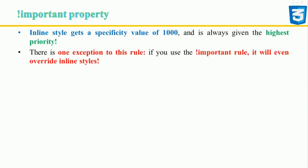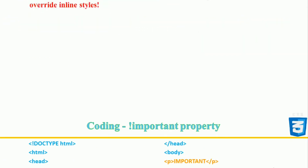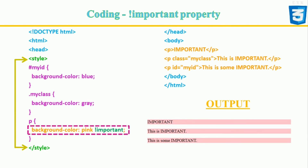The ultimate weapon — the !important property. The !important rule in CSS is used to add more importance to a property or value than normal. If you use !important, it will override all previous styling rules for that specific property on that element, bypassing all other rules. In this example, all three paragraphs will get the pink background color even though the ID selector and class selector have higher specificity — !important overrides the background-color property in both cases.